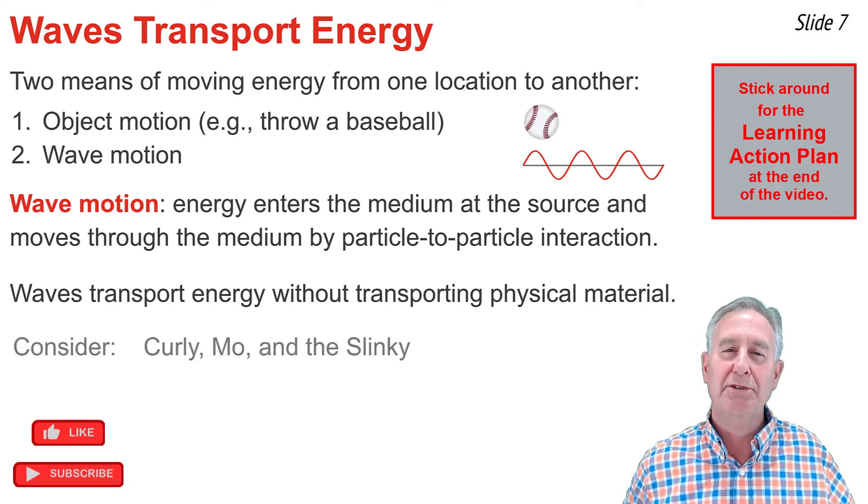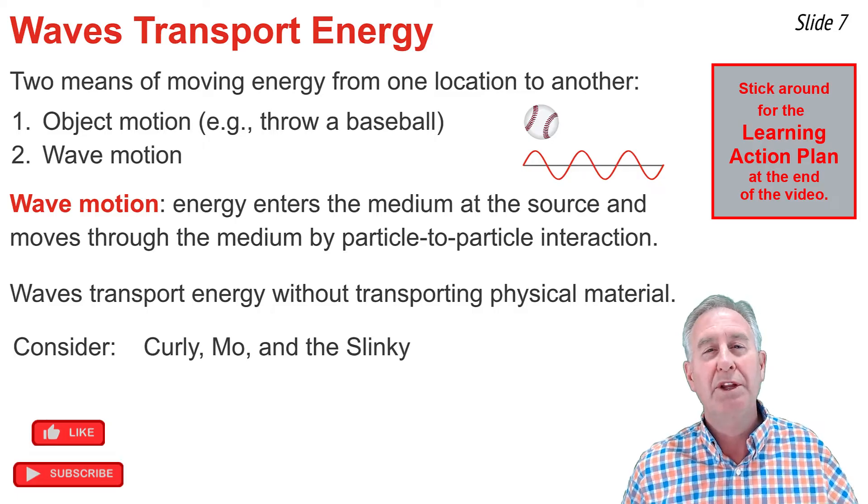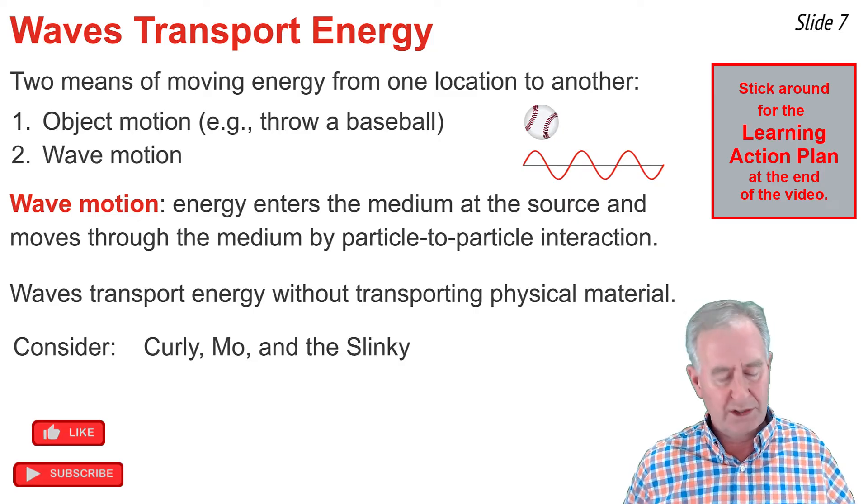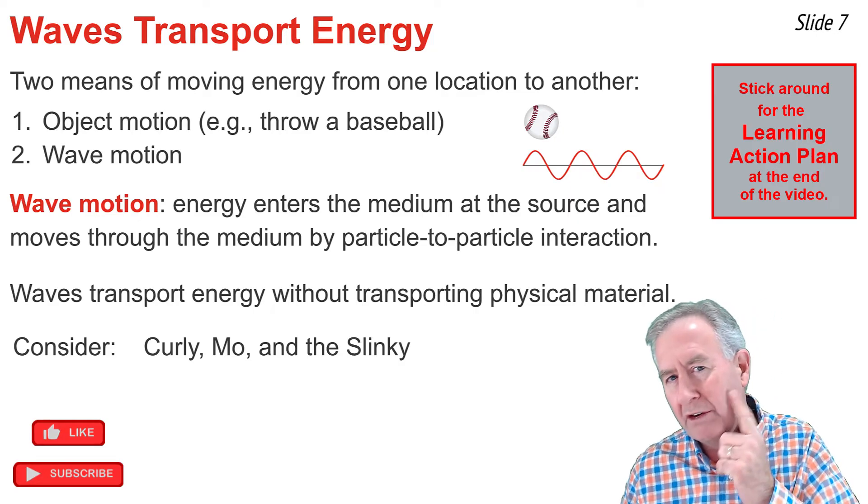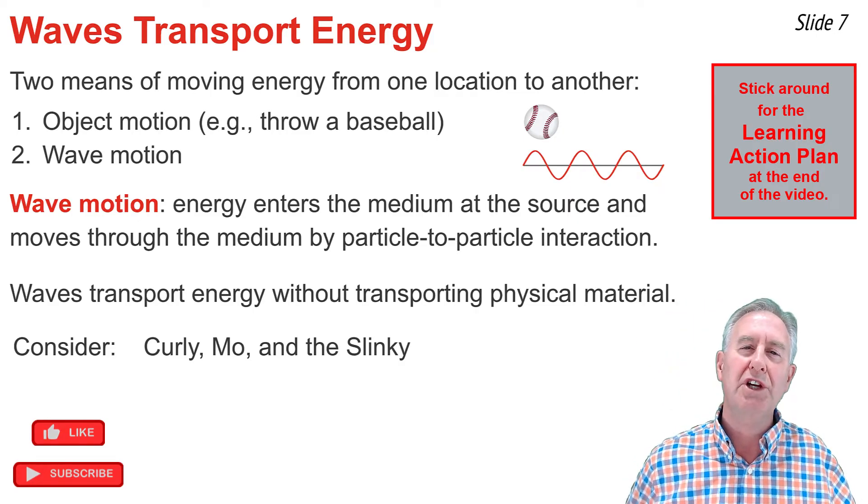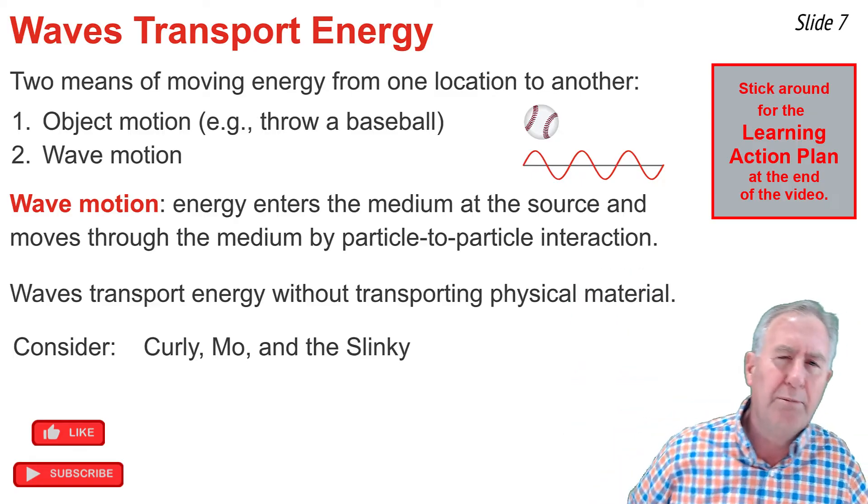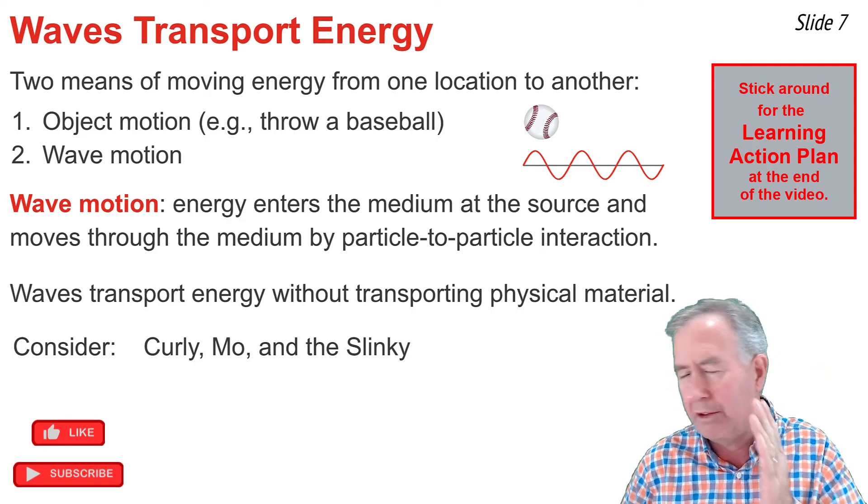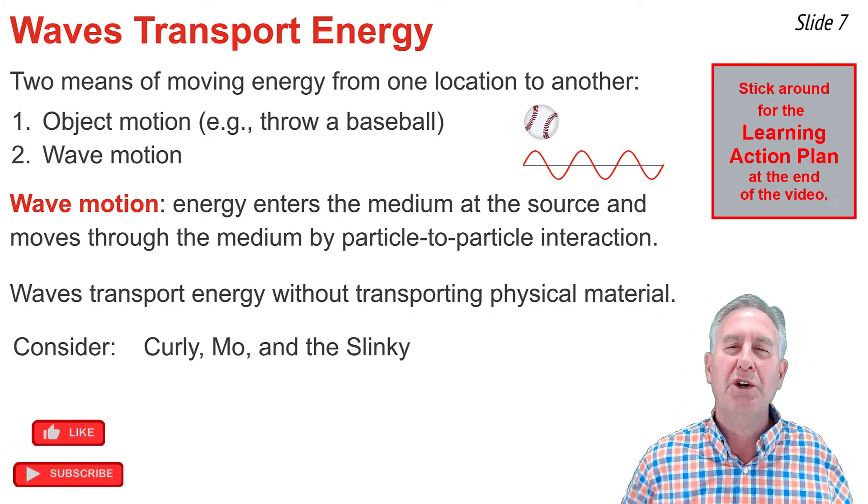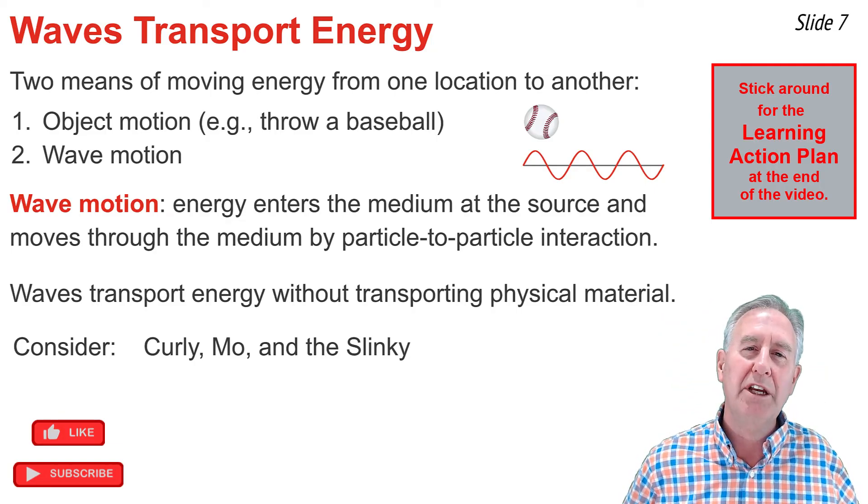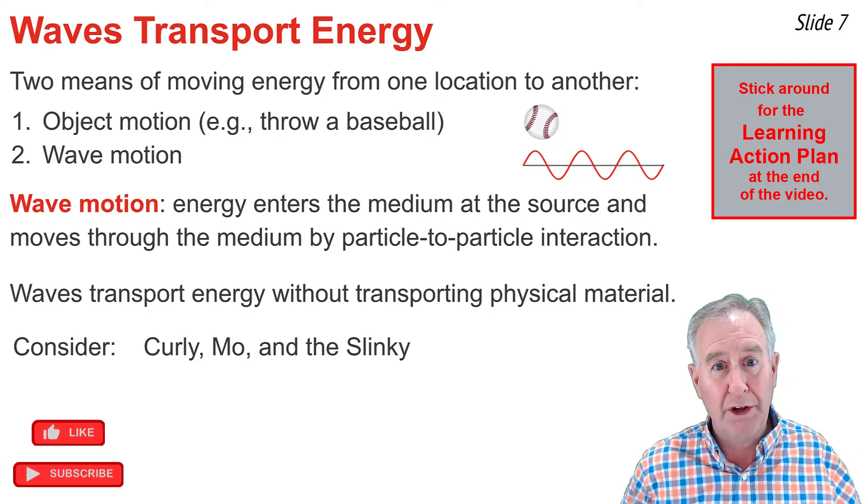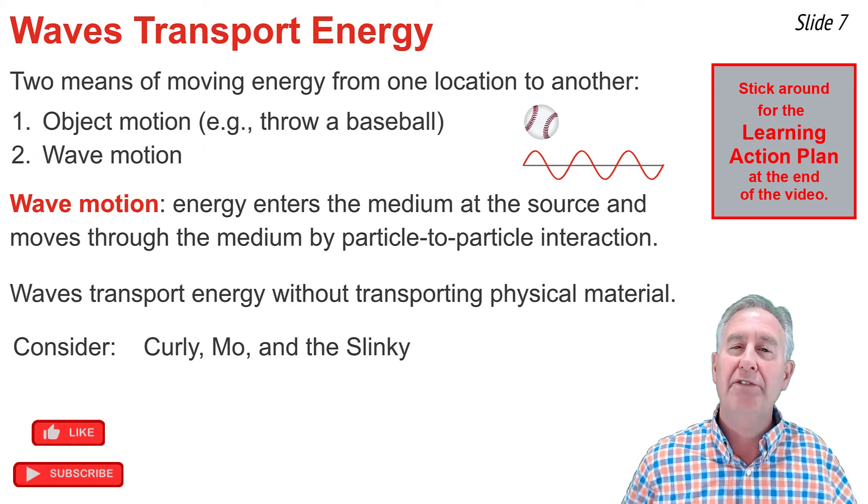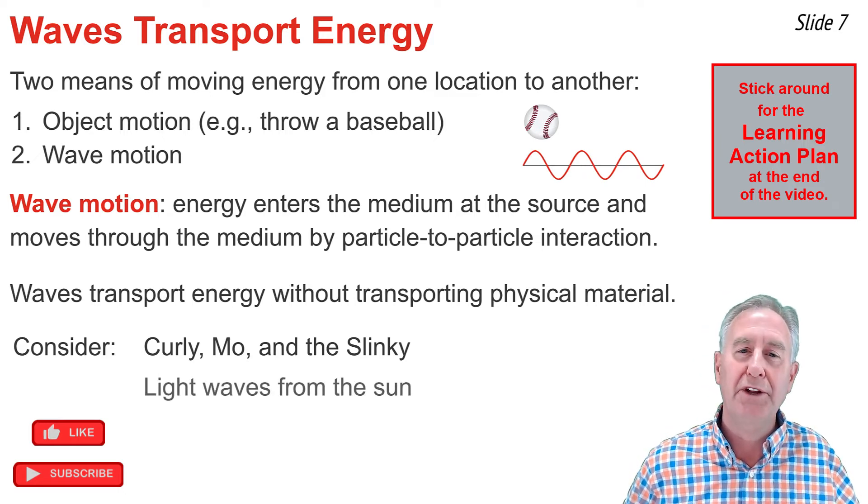We have many examples of this. Let's take, for example, we take Curly and Moe, two of the three stooges, and a slinky. And Curly takes the slinky and tells Moe to put the other end of the slinky up next to his cheek. And he gets a good hard pulse moving through that slinky. And when that pulse reaches Moe, Moe's cheek would go like that. And he would know that surely energy was moving through the medium. But that first coil that Curly pulled on never moved an inch. That's an example of energy transport without material transport.